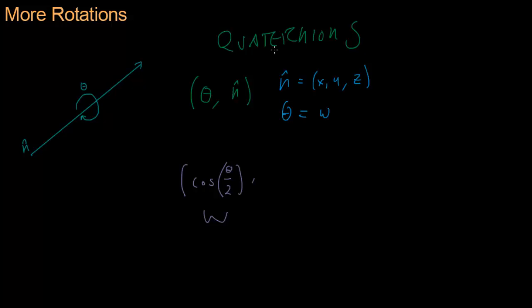And then next we have n-hat times, sorry, this should be sine. Our friend control and shift is back. Sine theta over 2. So it scales this unit length normal vector, the axis of rotation, by sine theta over 2.